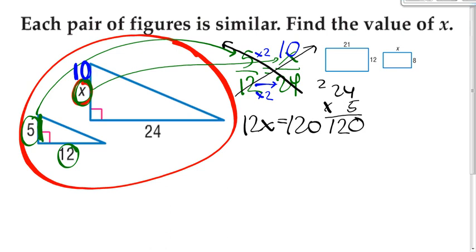Now this is called a one-step equation. You need to get x all by itself. So you'll divide both sides, because what you do to the left, you have to do to the right. You'll divide both sides by 12. The 12s cancel out.